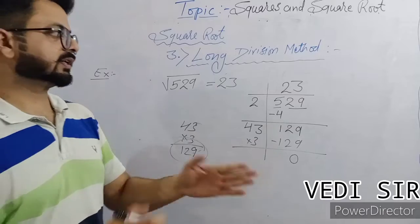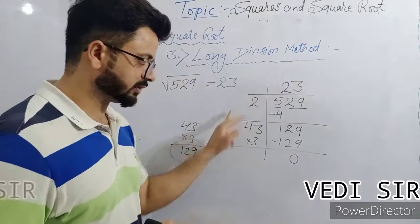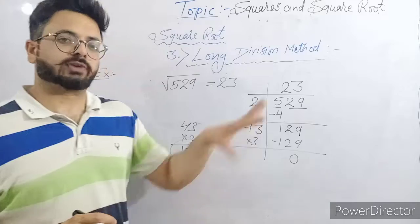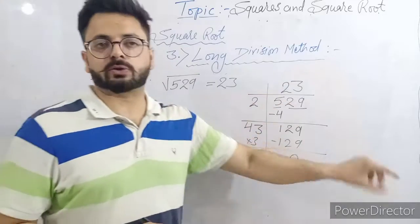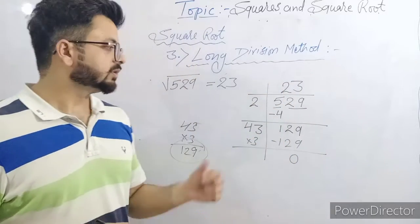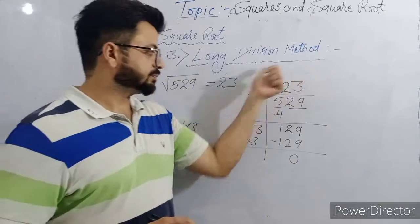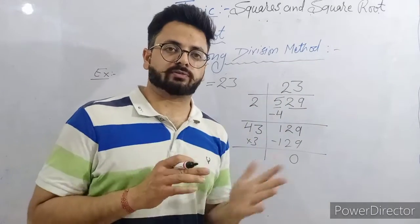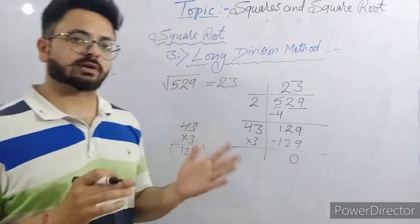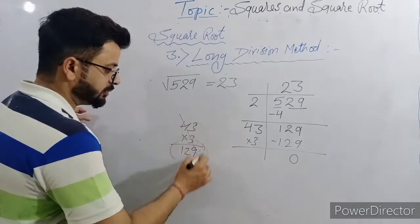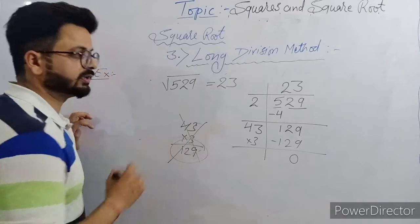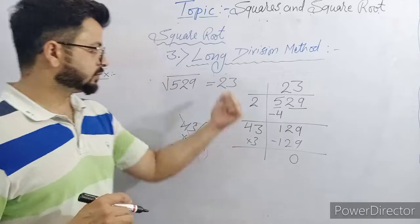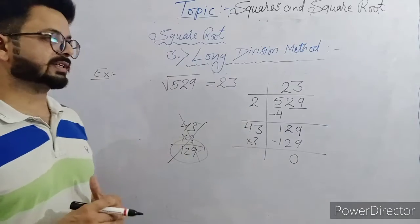The square root of 529 is 23. This is the long division method. In your answer, you have to show this working part. In prime factorization you show that part; in long division you show this part in your fair work — not in rough. The rough part is only for trying 1, 2, 3, 4. Note down this example.